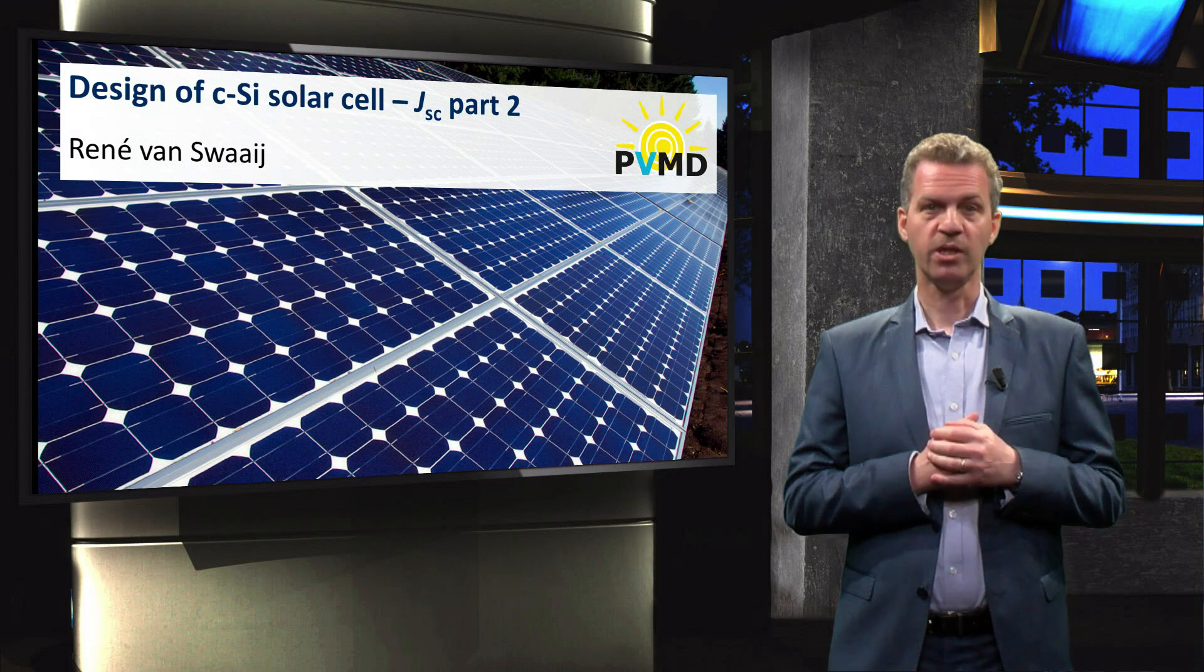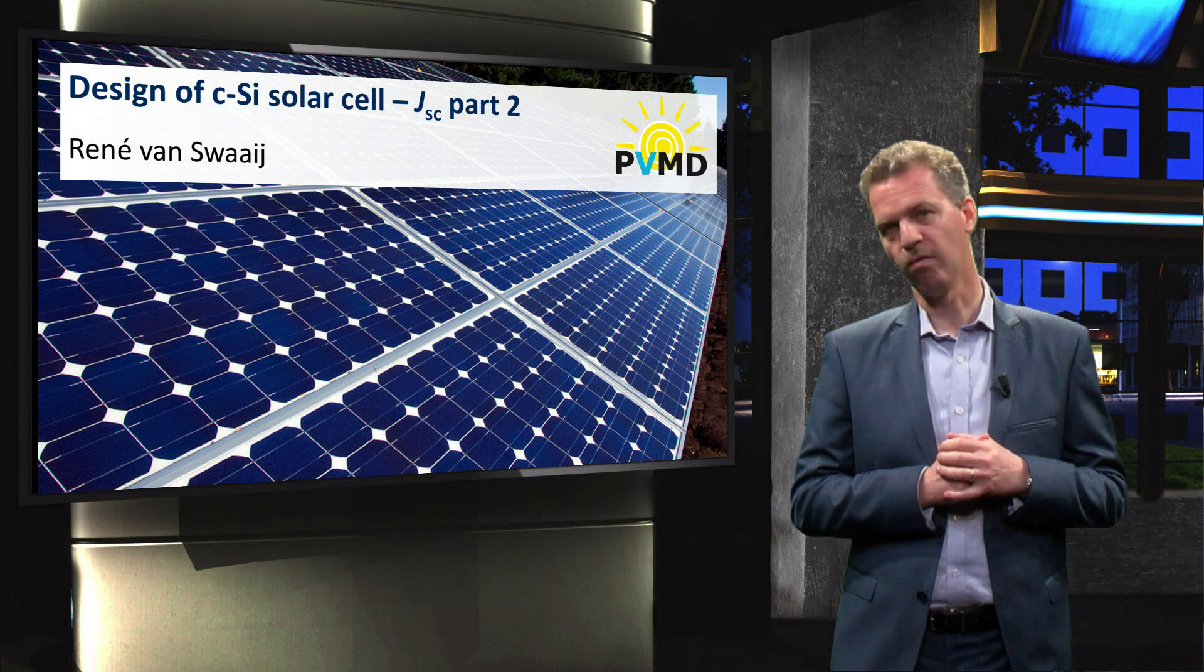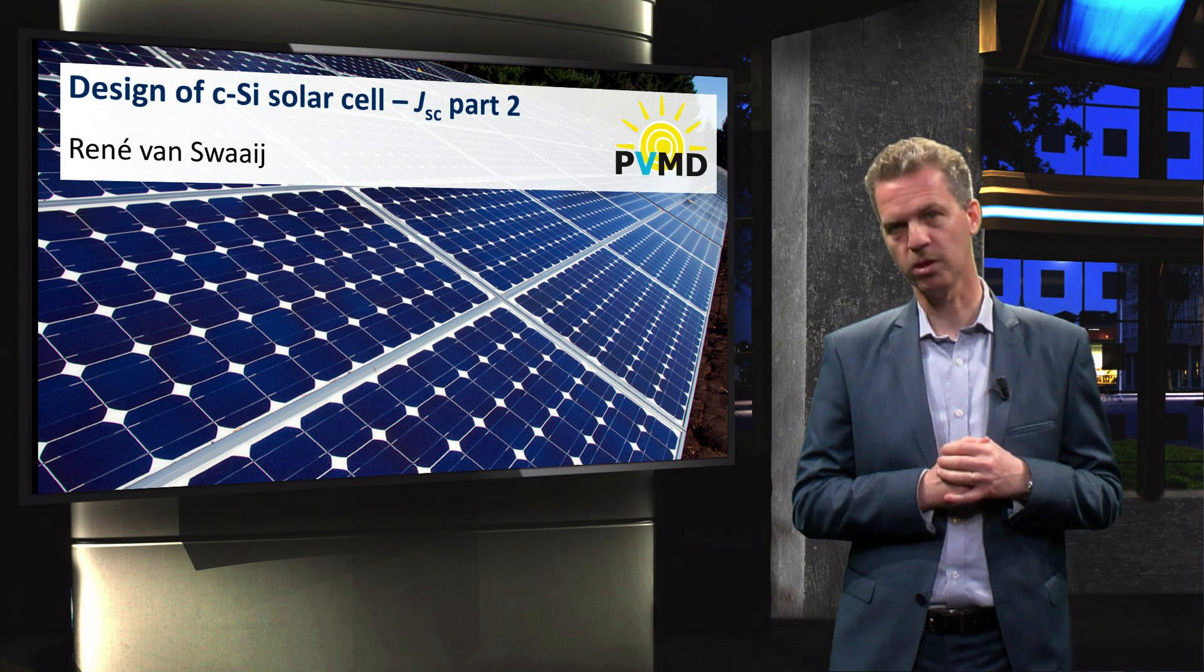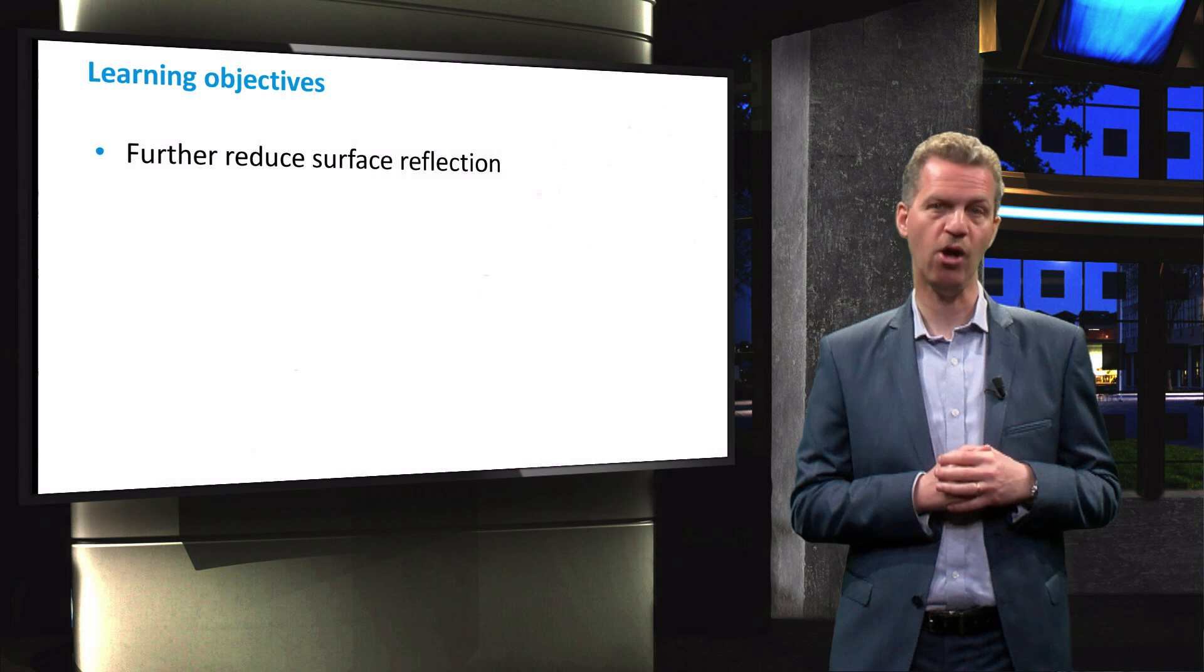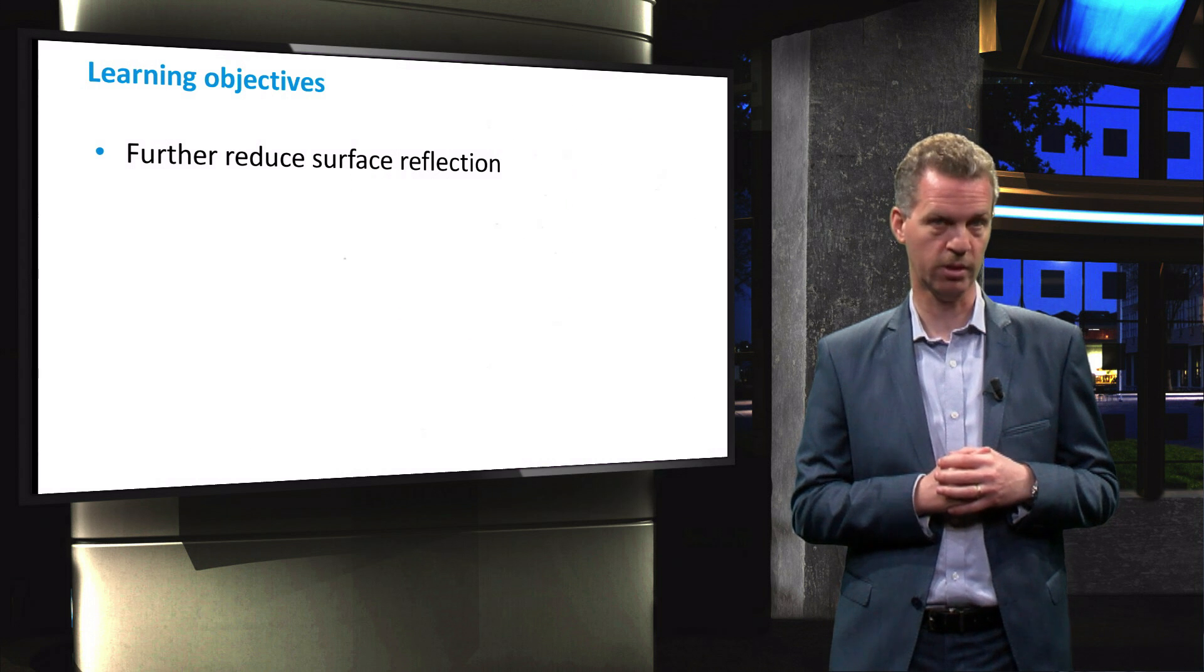In the previous video we have discussed two methods to reduce reflection of light at the front surface of a crystalline silicon solar cell. In this video we will show the third method to reduce reflection losses.